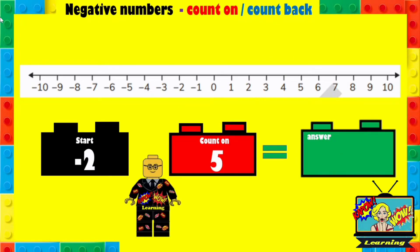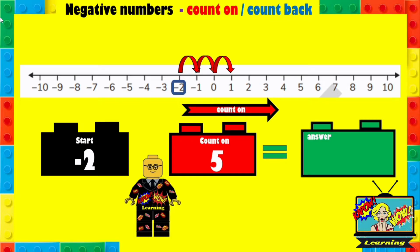Here's another one. If we start at minus 2 and we count on 5, what will the answer be? You can pause and then play it. So we start at minus 2 here and we're going to count on, moving to the right 5 places: 1, 2, 3, 4, 5. So the answer should have been 3.